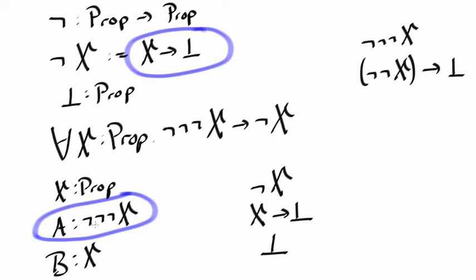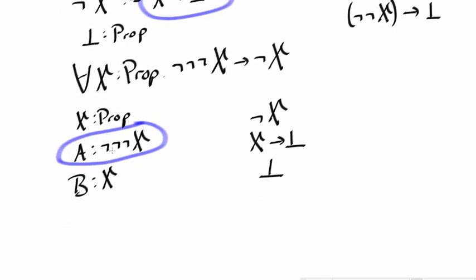So now we see that we can use A to reduce the claim to proving not not X. Now let's take a look at this not not X. Again, the definition of negation is something implies false. So this is the same as not X implies false.